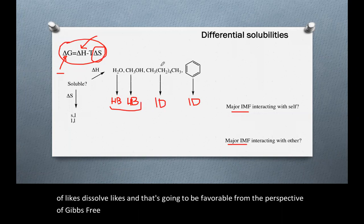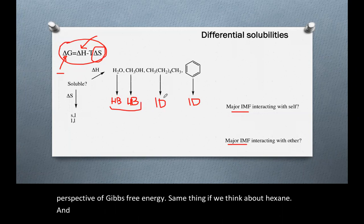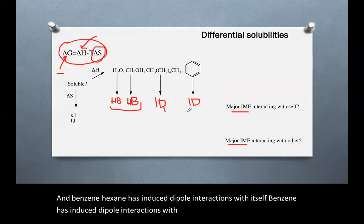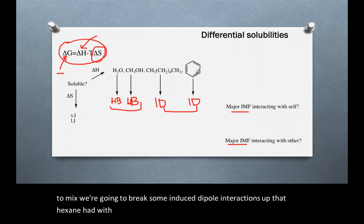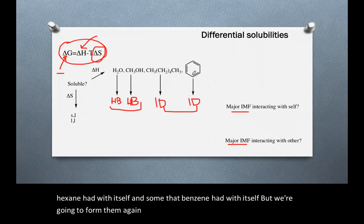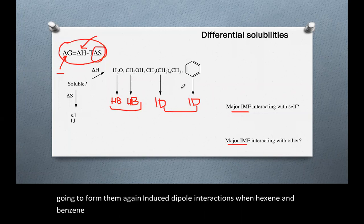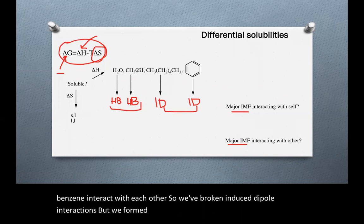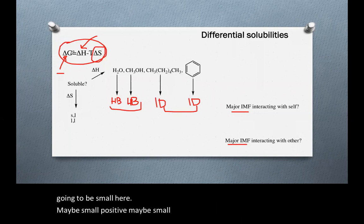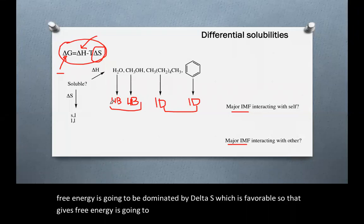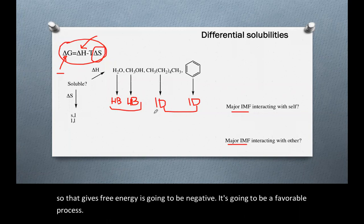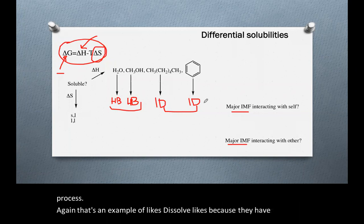The same logic applies to hexane and benzene. Hexane has induced dipole interactions with itself; benzene has induced dipole interactions with itself. When mixed, induced dipole interactions are broken but then re-formed between hexane and benzene. Delta H is small — maybe small positive, maybe small negative — and the change in Gibbs free energy is dominated by delta S, which is favorable. So delta G is negative; it's a favorable process. That's another example of like dissolves like because they have the same type of intermolecular forces.